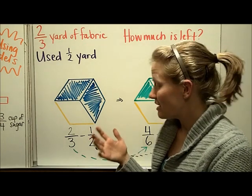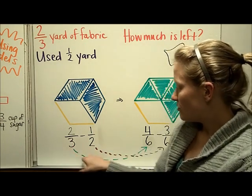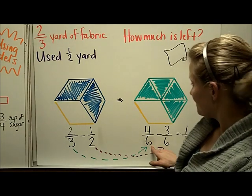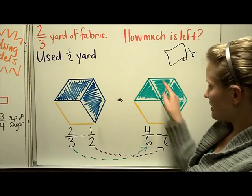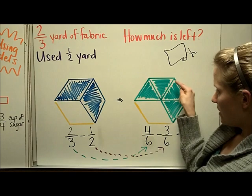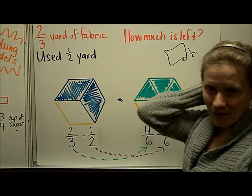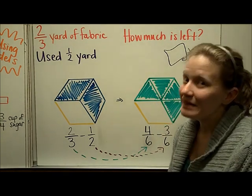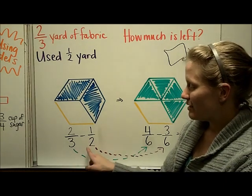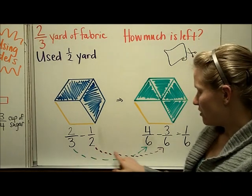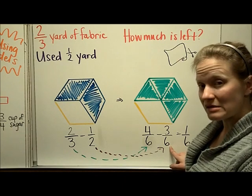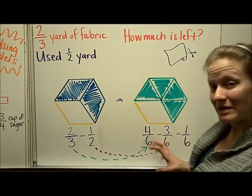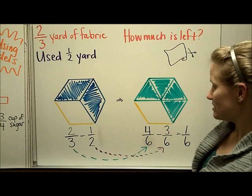So I'm going to have to make an exchange. I'm going to change the two-thirds into four-sixths — one, two, three, four-sixths — there's one-third and another third. Now I can think about taking away one-half, or something equal to one-half. One-half would be equal to three-sixths, and I would now want to take away three of those sixths.